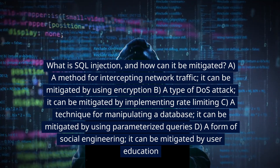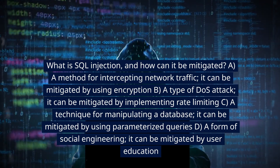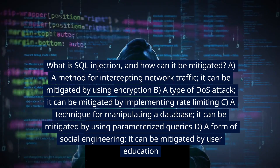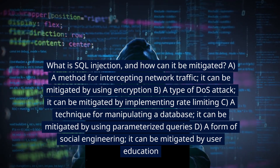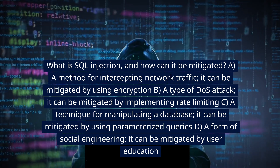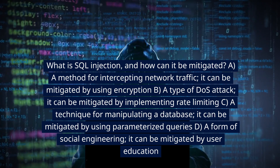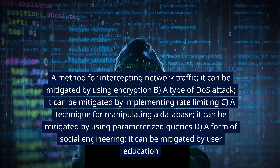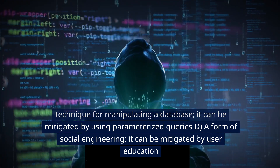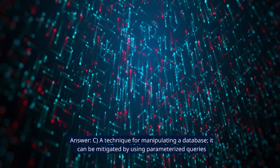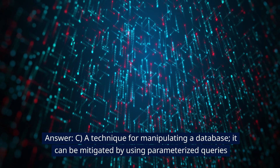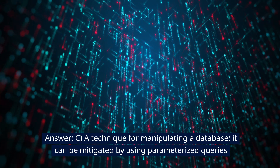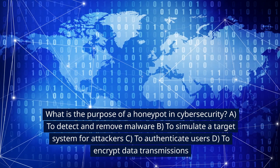What is SQL injection and how can it be mitigated? A. A method for intercepting network traffic; it can be mitigated by using encryption. B. A type of DoS attack; it can be mitigated by implementing rate limiting. C. A technique for manipulating a database; it can be mitigated by using parameterized queries. D. A form of social engineering; it can be mitigated by user education. Answer: C. A technique for manipulating a database; it can be mitigated by using parameterized queries.